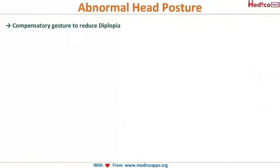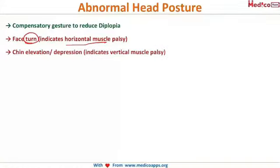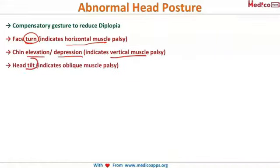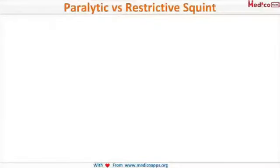Abnormal head posture is a compensatory gesture to reduce this annoying diplopia. The patient will start turning his head. When there is a face turn, it indicates a horizontal muscle palsy. When there is chin elevation or depression, it indicates a vertical muscle palsy. When there is a head tilt, it indicates an oblique muscle paralysis.